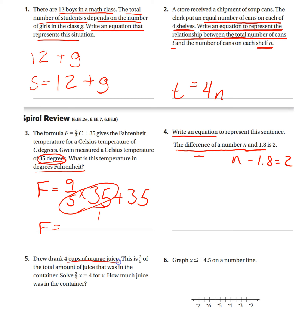Drew drank four cups of orange juice. This is two-fifths the total amount of juice that was in the container. Solve. So we just need to solve for X. So two-fifths X equals four. The inverse operation would be division, so you can either divide both sides by two-fifths, or if you want to get rid of the fraction, you can multiply each side by five first.